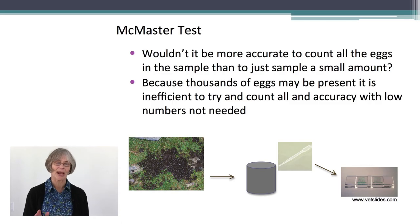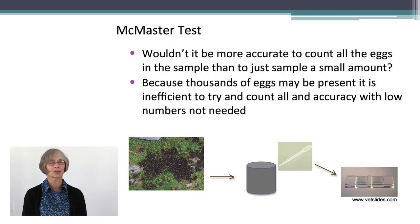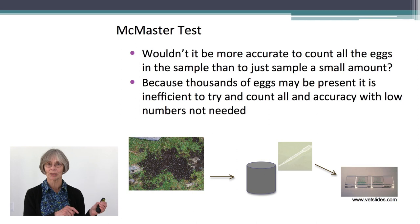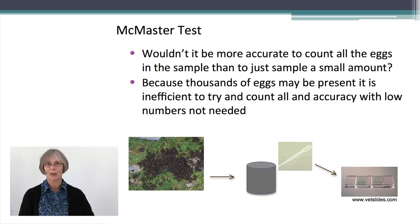You might ask, wouldn't it be more accurate to count all the eggs in the sample? The difficulty is that with sheep and goats there may be many thousands of eggs in a gram, and counting all those eggs would be extremely time consuming. This system counts what's in a small amount and then calculates back to give the final amount. That means we can miss very small numbers of eggs in a sample, but in sheep and goats that doesn't matter. Very small numbers of eggs are not important, so it's better to sacrifice the ability to find an animal with only a few eggs per gram rather than spend an hour counting a sample with thousands of eggs per gram.